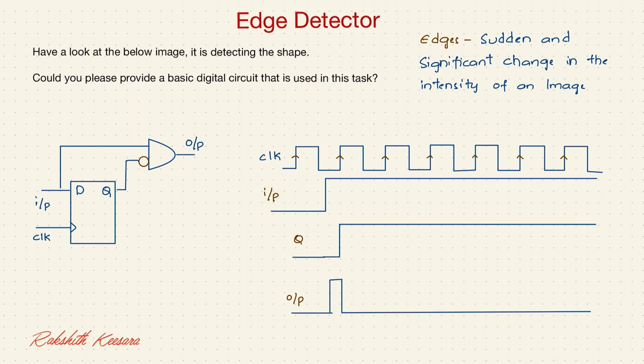Whenever an input is not synchronized, apply it to a D flip flop. Then it gets in par with the clock. So the same thing I will do here.